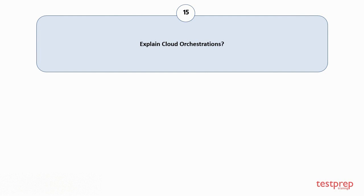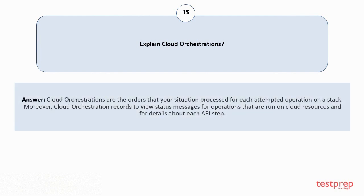Question number fifteen: Explain cloud orchestrations. Cloud orchestrations are the orders that your system processes for each attempted operation on a stack. Moreover, cloud orchestration records are used to view status messages for operations that are run on cloud resources and for details about each API step.